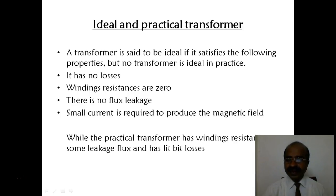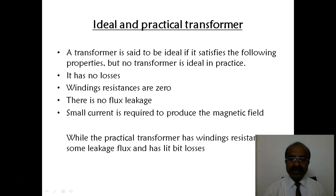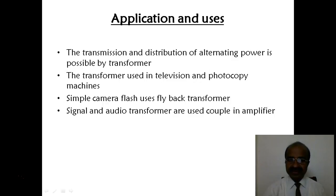Ideal and practical transformers. A transformer is said to be ideal if it satisfies conditions such as: it has no loss, winding resistances are zero, no flux leakage, and only a small current is required to produce the flux. A practical transformer, however, has winding resistance, leakage flux, and also has some losses.